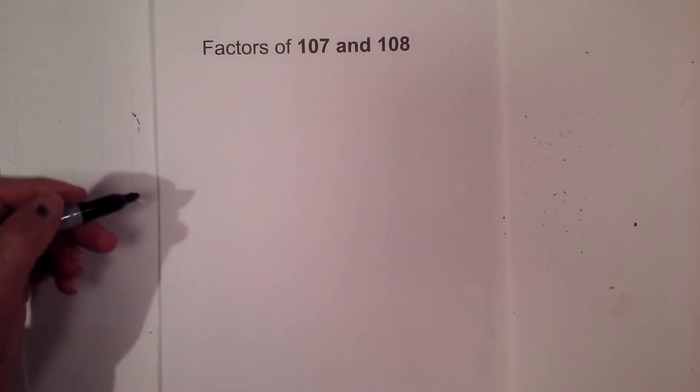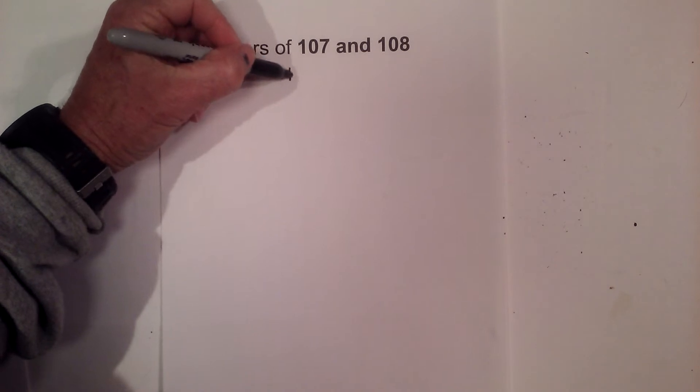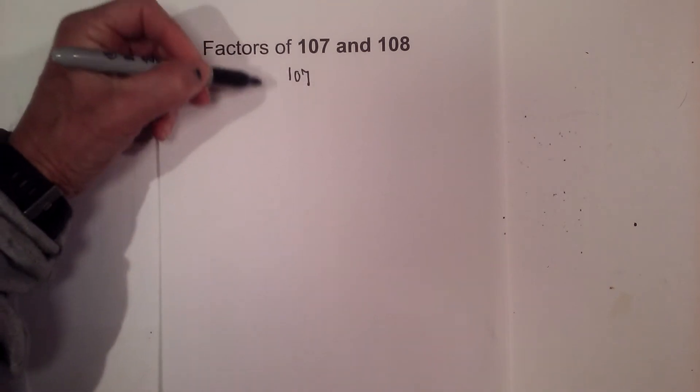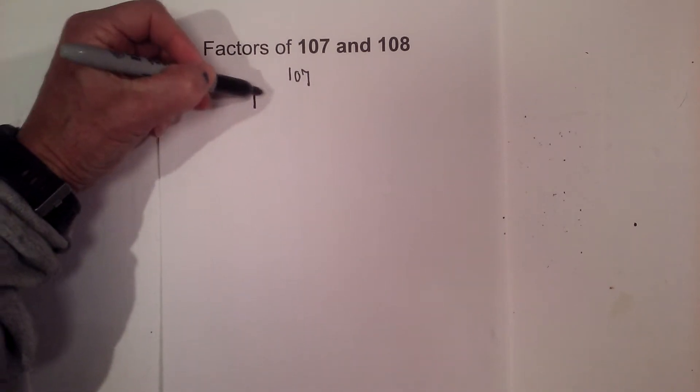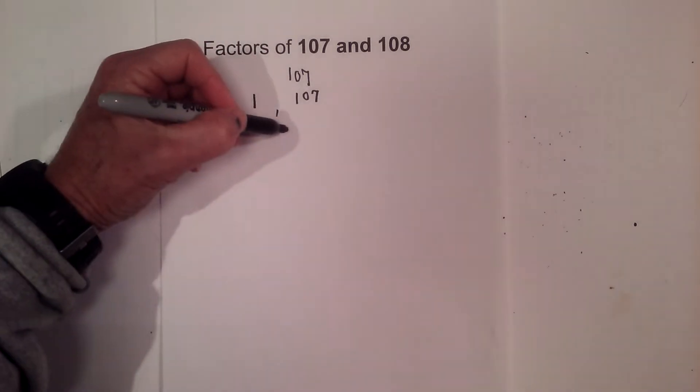So the factors of 107 and 108. Let's get started. First with 107. 107 is prime, so the only factors are 1 and 107.